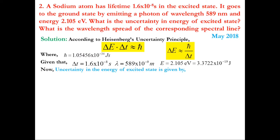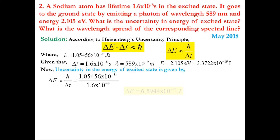Calculating the uncertainty in energy of the excited state by substituting ħ and Δt into the formula, we get ΔE = 6.5944×10⁻²⁷ J. This is the answer to the first part of this problem.